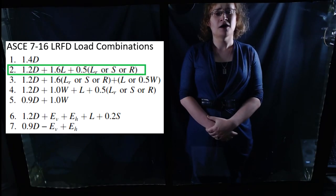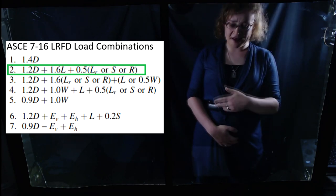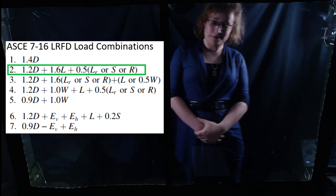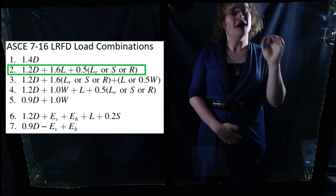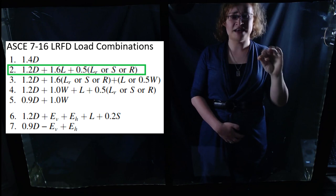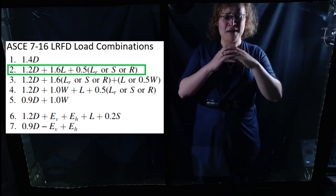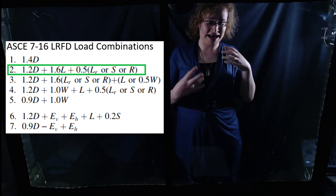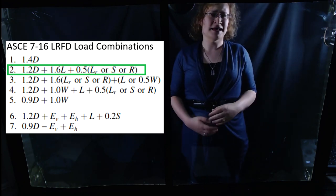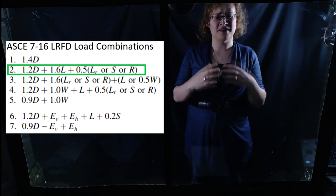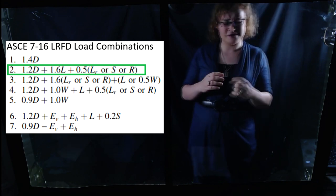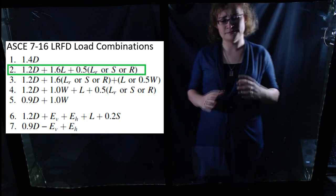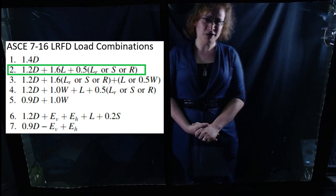Next, consider load case two: 1.2 times dead plus 1.6 times live plus 0.5 of roof live load, snow load, or rain load. Notice we're dealing with 1.2 times dead now, not 1.4 — meaning we're no longer considering a massively underestimated dead load. Rather, we're considering a higher-than-expected dead load, but something still within the realm of reason. A 20% increase still requires some unusual circumstances, but not as incredible as a 40% increase. In most of the LRFD load combinations, we consider 20% as our dead load margin.